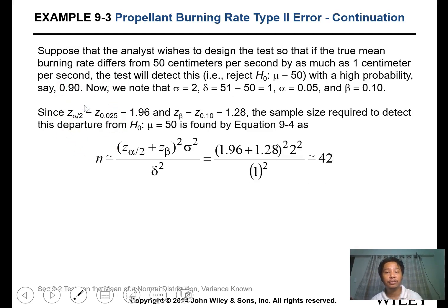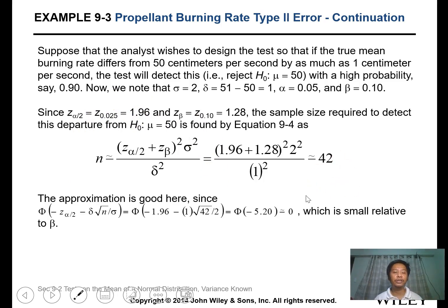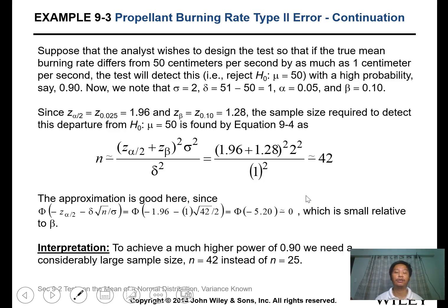You need to get the z values. The z for 0.05 is 1.96, z for beta 0.1 is 1.28 from the z table. Calculating the sample size using this formula, we obtain 42, rounded up. Always round out. To increase the power to 0.90, we need at least 42 samples instead of the 25 samples previously.